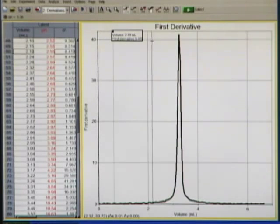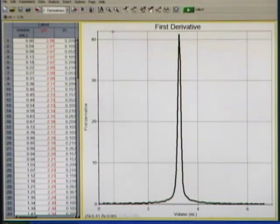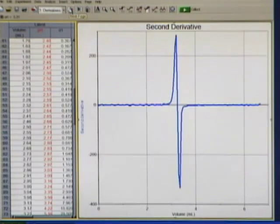Even better than first derivative though is second derivative, so I'm going to close out this first derivative, go to the next page button again, and here's our second derivative. Our equivalence point is going to be right where that second derivative crosses the zero line.